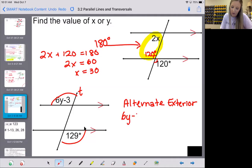Alternate exterior angles are congruent. So we are going to set them equal to each other. So we have 6Y minus 3 equals 129. If I add 3 to the other side, I get 132. If I divide by 6, I get 22.